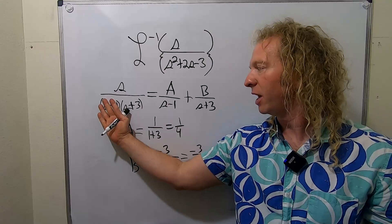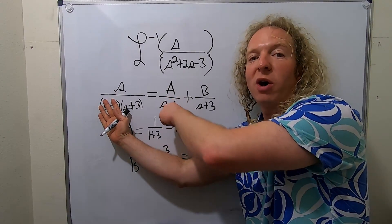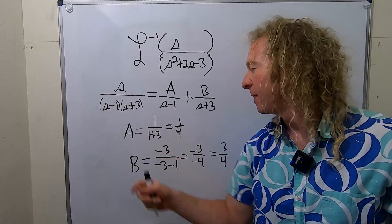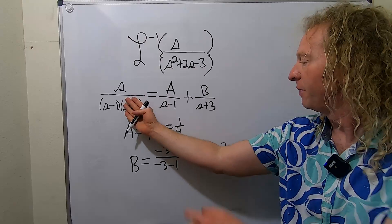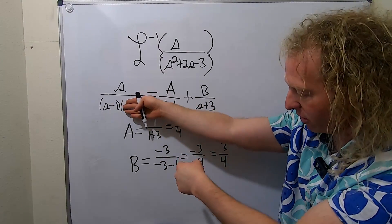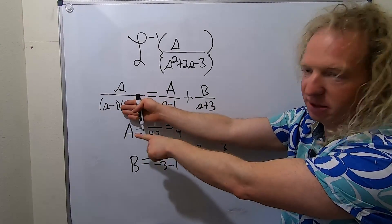So again, to find A, you cover up what's under A. And then in this case, what makes it 0? 1. So you plug in 1s. Boom, there it is. To find B, you cover up what's under B. What makes this undefined? Negative 3. So you plug in negative 3s. There it is.